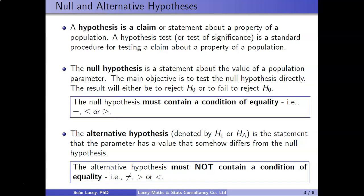If a claim has no condition of equality, it must be the alternative hypothesis. The three conditions of non-equality are: not equal to, greater than, and less than. If a claim involves the word 'difference' — for example, testing that a difference exists between groups — that implies 'not equals,' which is not a condition of equality, so it has to be an alternative hypothesis.